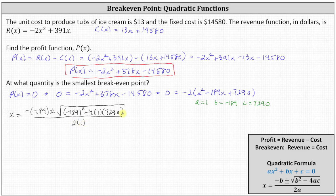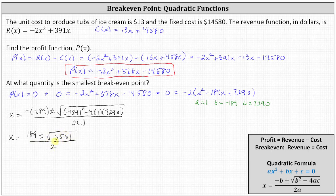For the next step, let's go ahead and simplify the discriminant, which is the square of negative 189 minus four times one times 7290, which equals 6561. This gives us x equals positive 189 plus or minus the square root of 6561, all divided by two. And the square root of 6561 is equal to 81, which gives us x equals 189 plus or minus 81, all divided by two.